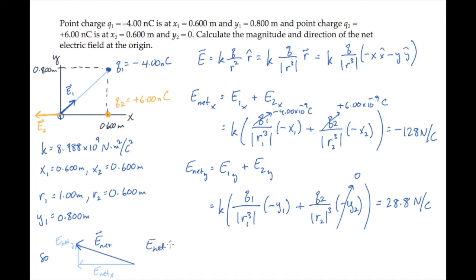Its magnitude is the square root of the sum of the squares. When you calculate that, you find it equals 131 newtons per Coulomb.